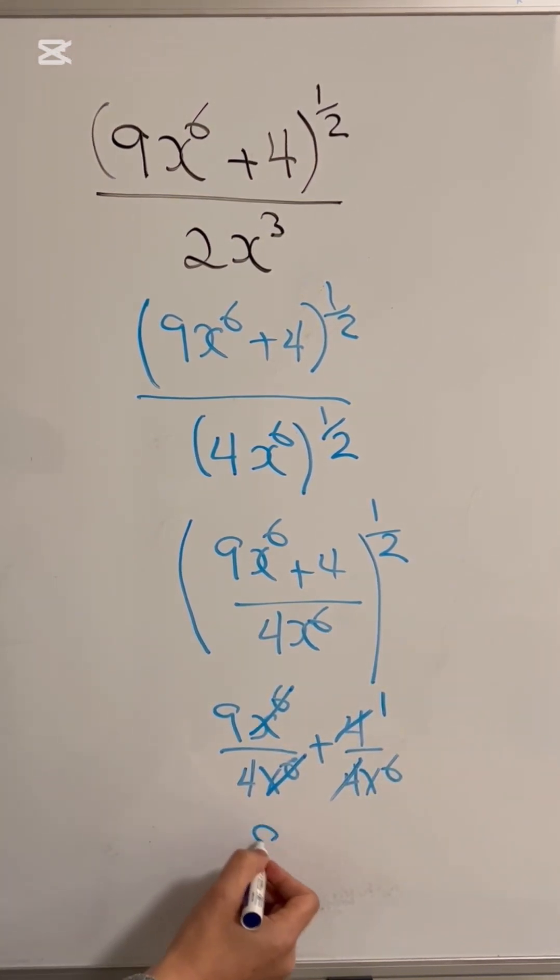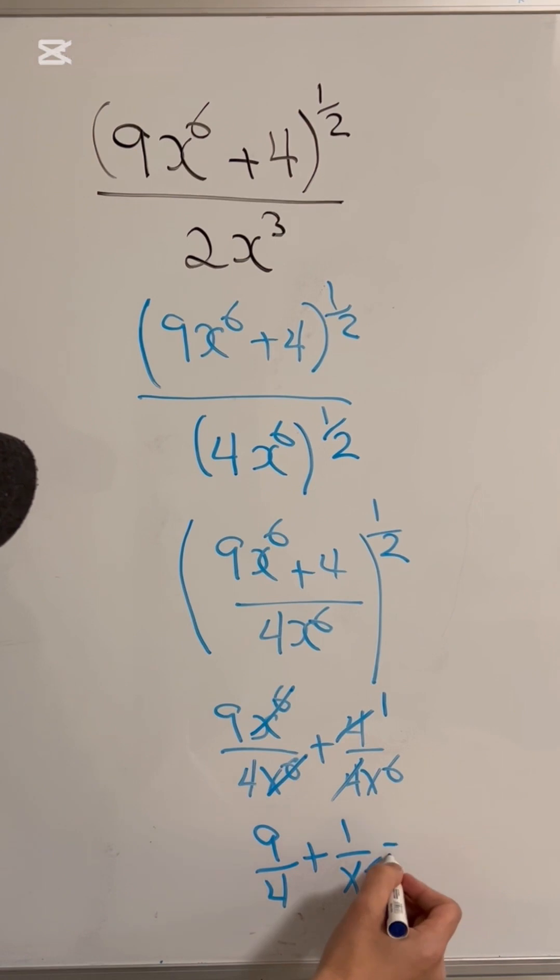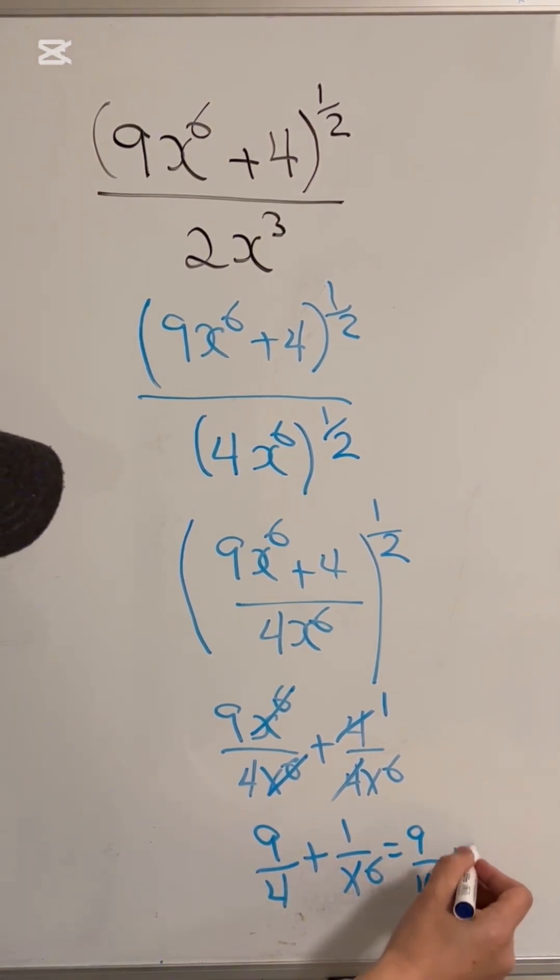So this would be 9 over 4 plus 1 over x to the 6, also could be expressed as 9 over 4 plus x to the negative 6.